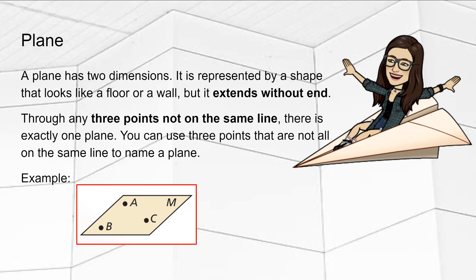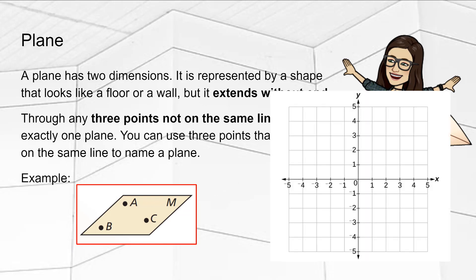So here we have a plane. It's hard to draw because it extends without end. But we have used planes before, such as the coordinate plane. The coordinate plane is two-dimensional and extends forever and ever in all directions.